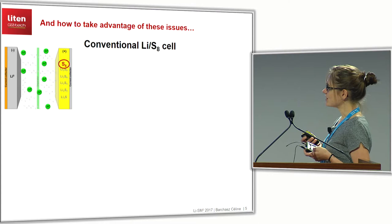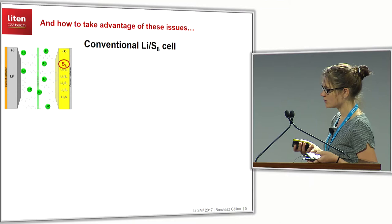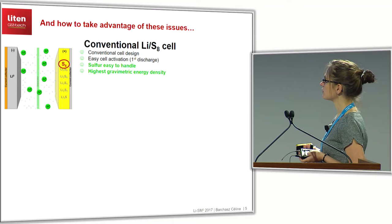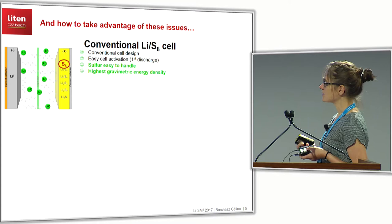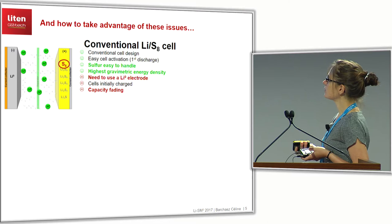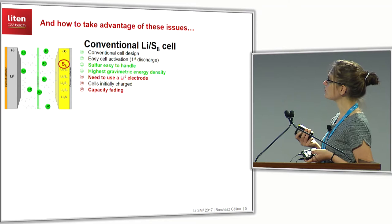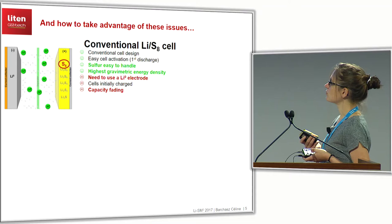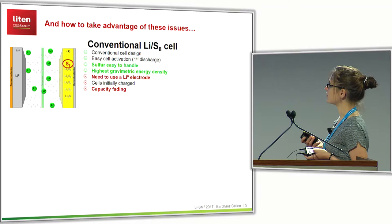There are also many issues in the lithium-sulfur system, but we have different ways to approach the problem. First, we can start with a lithium metal anode and a sulfur positive electrode. This is the conventional way to investigate lithium-sulfur cells — it is easily activated during the first discharge, sulfur is easy to handle, and this system gives the highest gravimetric energy density. However, the sulfur electrode does not contain any source of lithium, so we need to use a lithium metal anode, and cells are initially charged during activation. This system can also suffer from capacity fading.